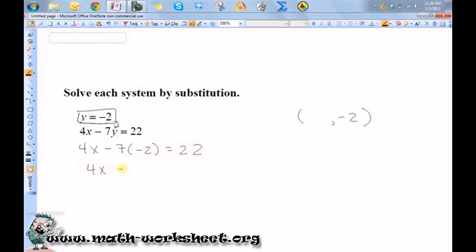So 4x plus 14 equals 22. Now I'm just going to solve for x by subtracting 14 from both sides.